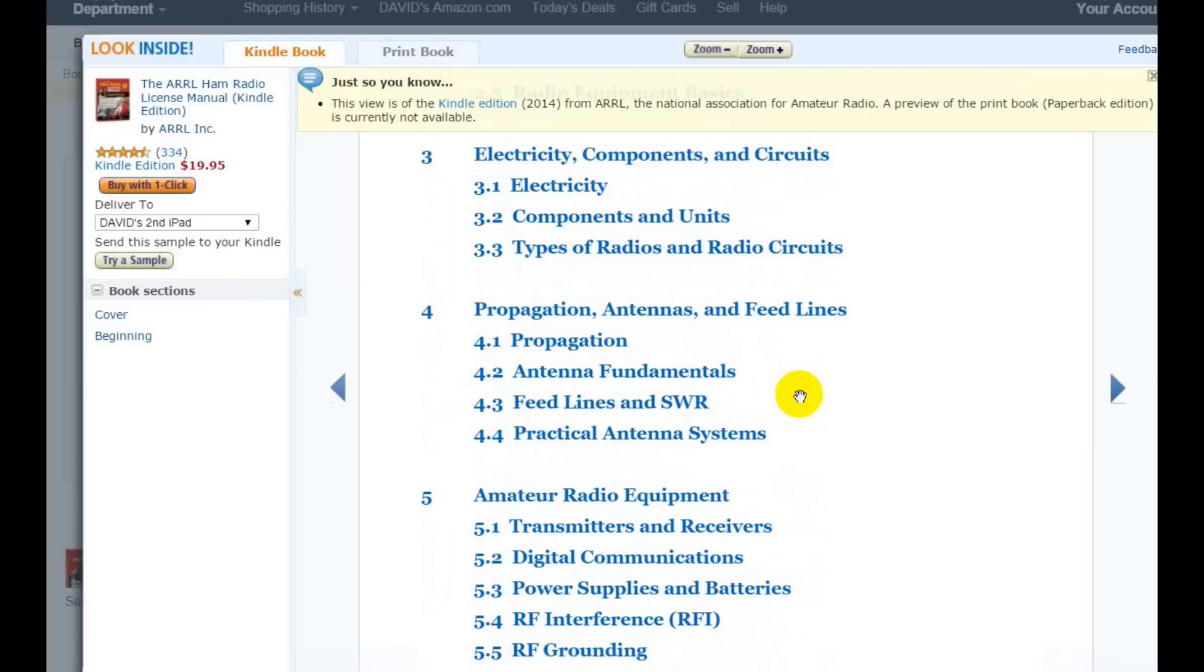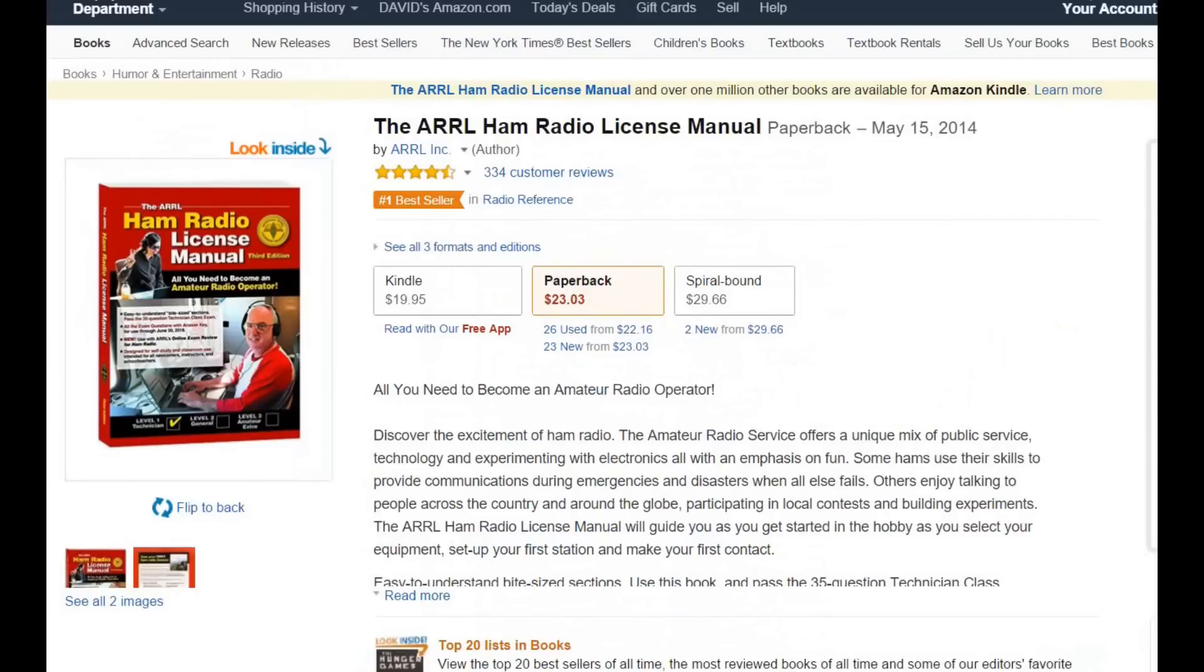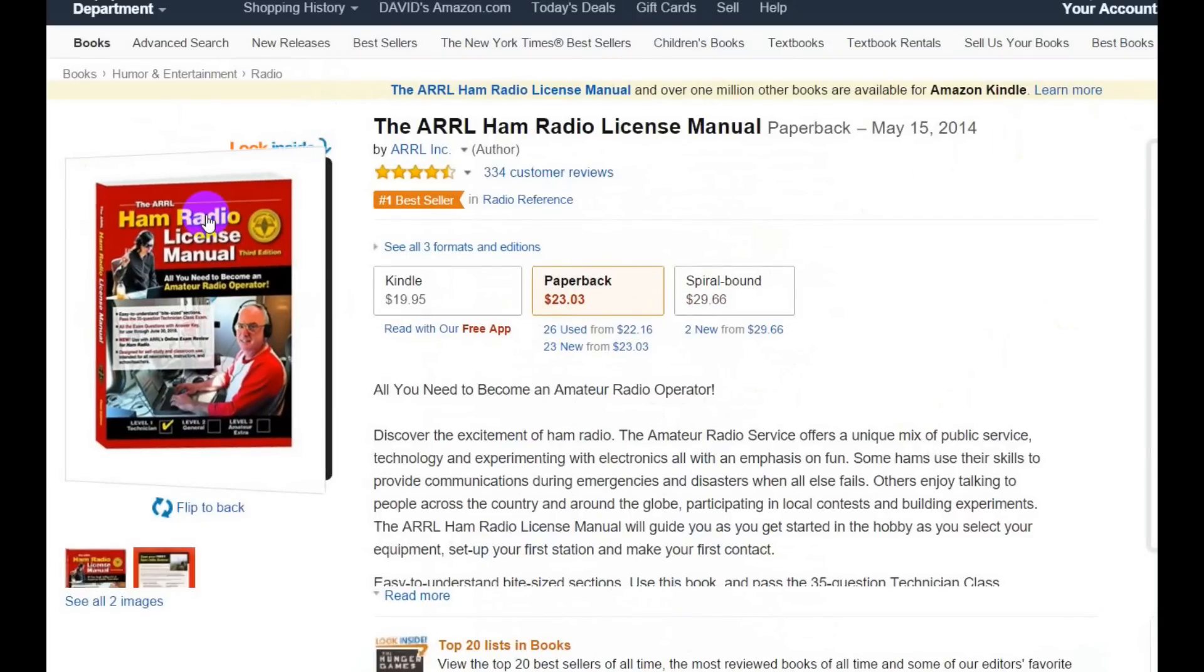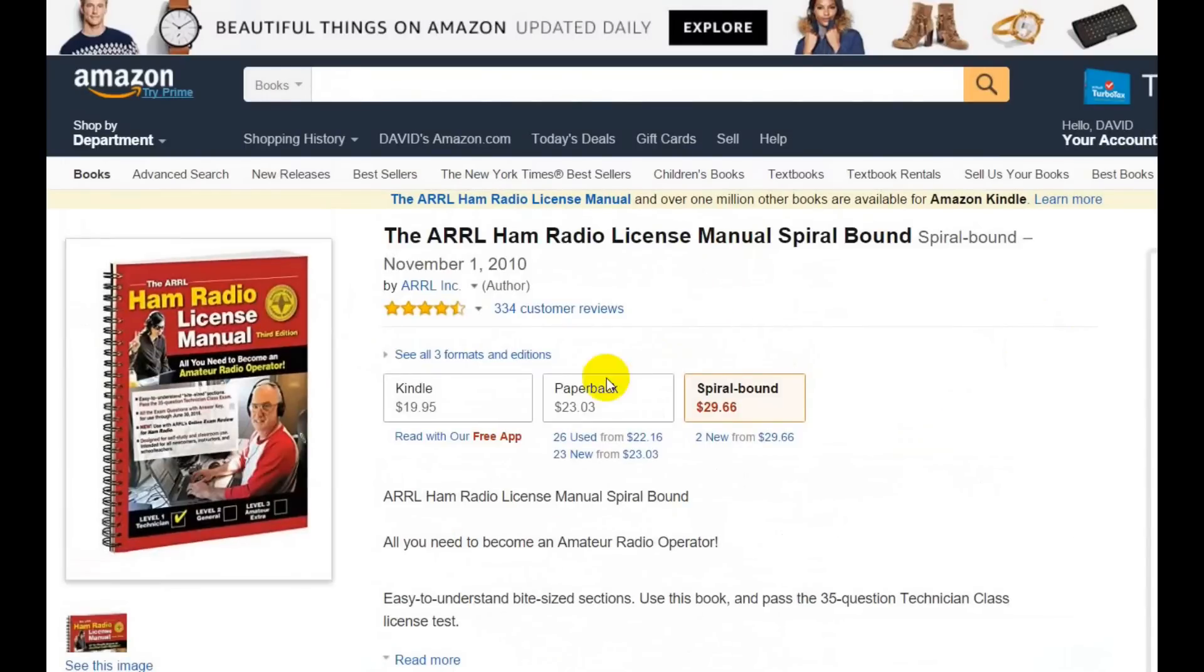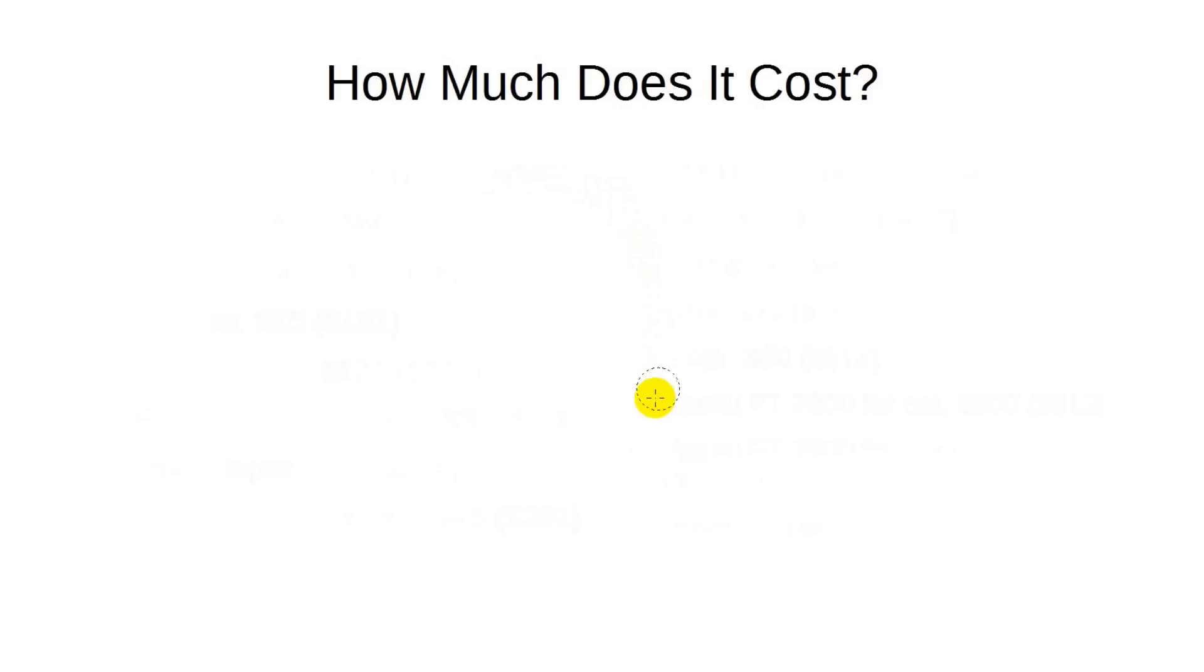You can get it on Amazon for less money than on the ARRL website. Plus, shipping on Amazon is less expensive too. Be sure to get the current version. For use prior to June 30th, 2018, you'll be looking for the third edition. Let's see. Let's buy the spiral bound version because it lies flat. That's $30 plus $5 shipping and another buck for tax. That's $36.